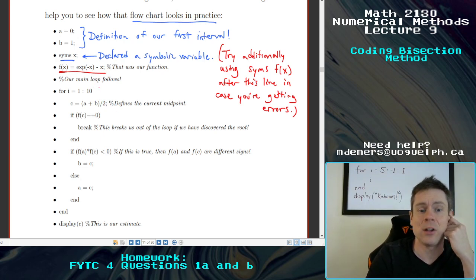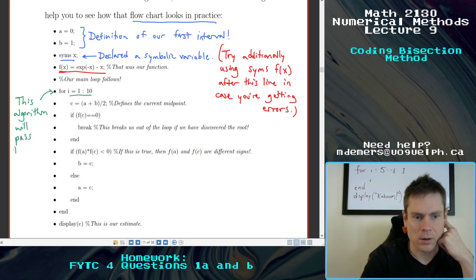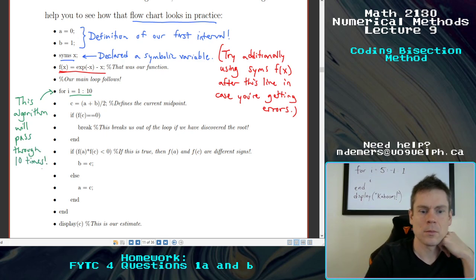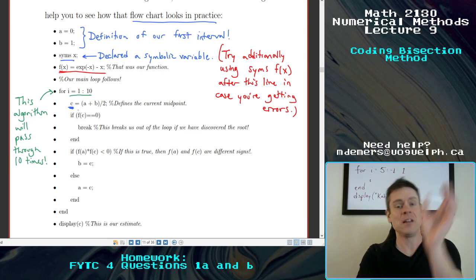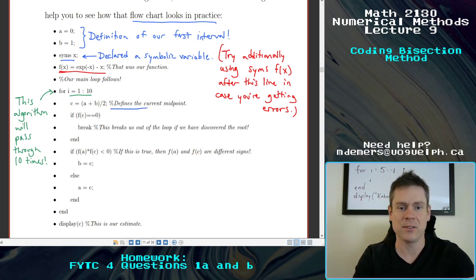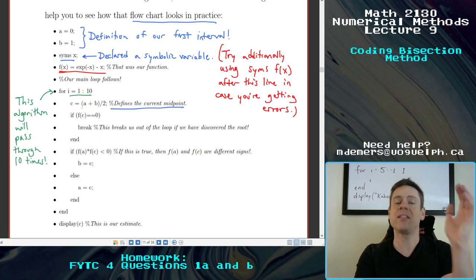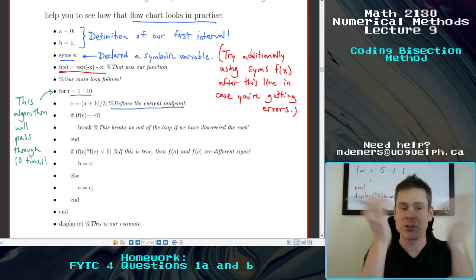So our main loop is as follows here. We've made a choice to just run this algorithm 10 times. So this algorithm will pass through 10 times. All right. Sounds good. Sounds good. And here are the different pieces. I've tried to comment here to make it very clear, but everything seems like it should be straightforward, right? There's the definition of the C finding the current midpoint. That's what this is. So we're just finding C relative to our current values of A and B, just averaging the two together.